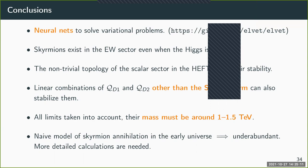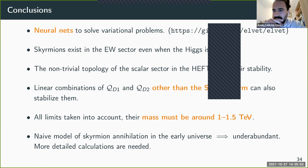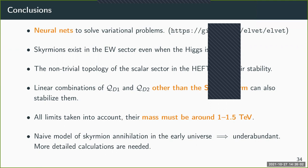Question: How generic is the Skyrme term in UV completions — does anything produce it? Speaker: It appears in many examples. A scalar singlet already gives some combination of QD1 and QD2 (not exactly the Skyrme term), while a vector triplet or singlet gives exactly the Skyrme term. So it seems fairly generic.